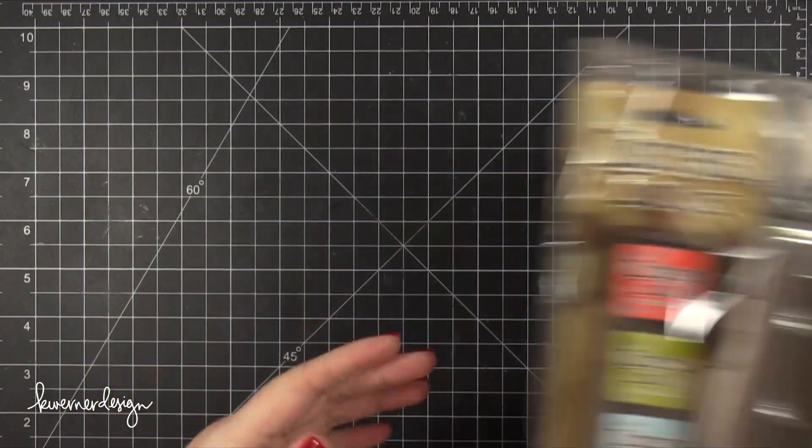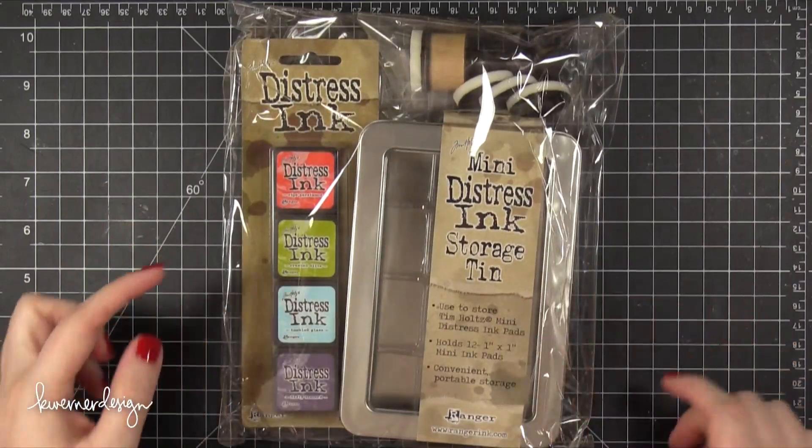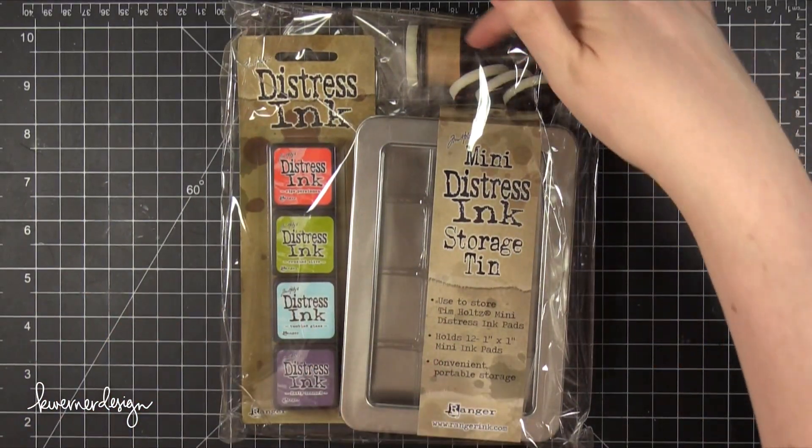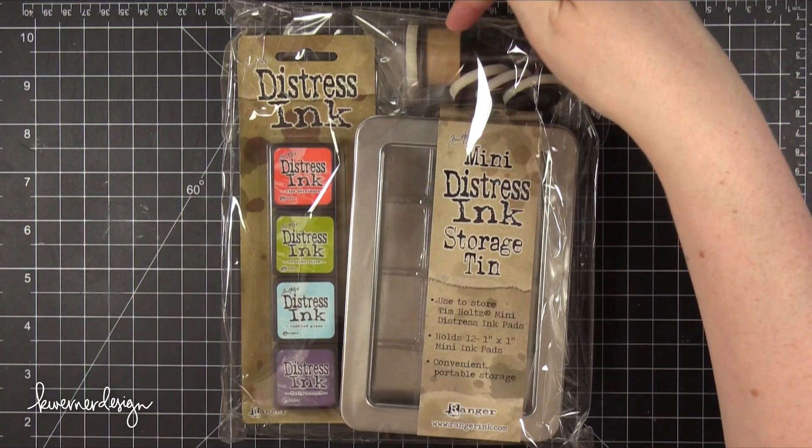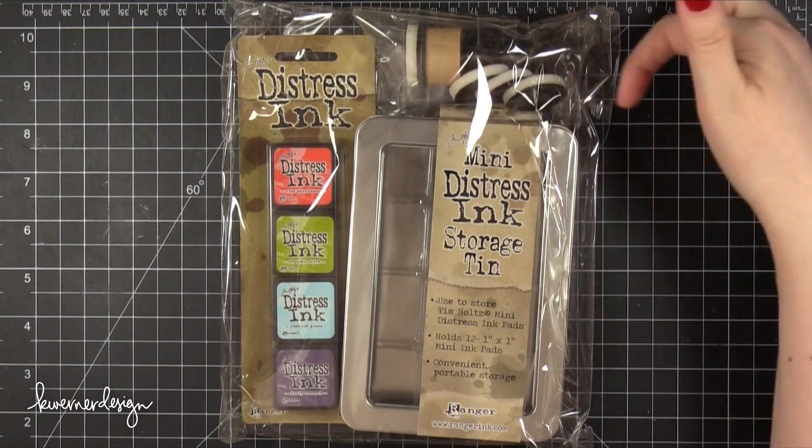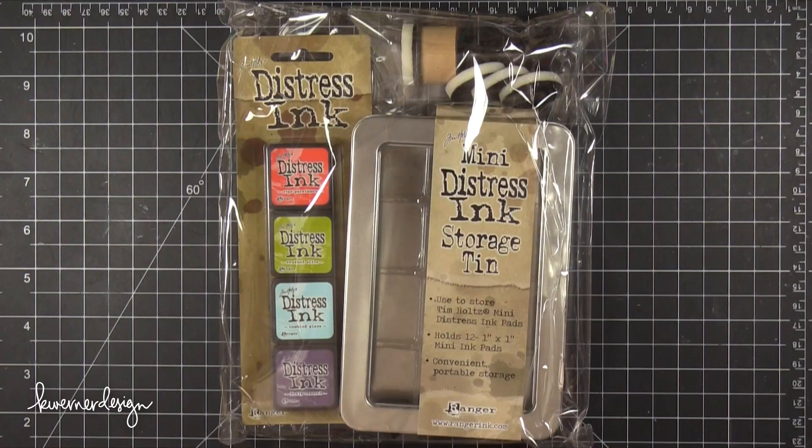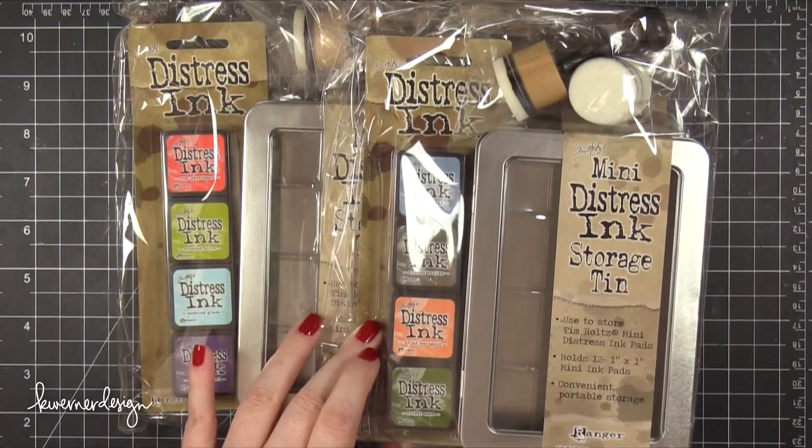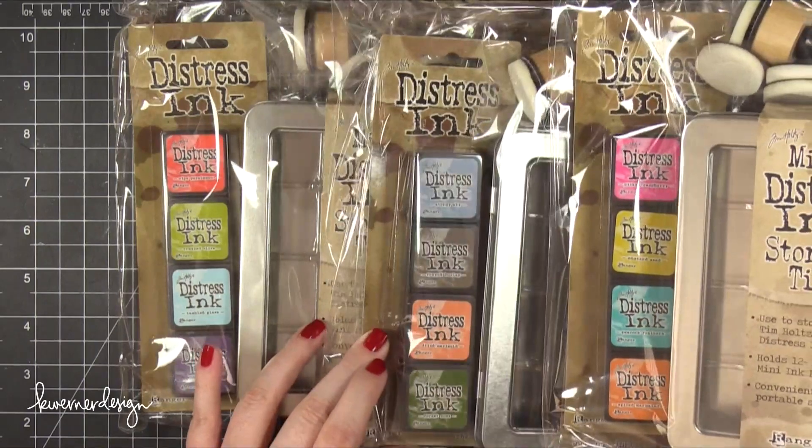The prizes are these fun packs of Mini Distress Inks, a Mini Distress Storage Tin and the Mini Round Blending Tool. You have the Blending Tool and three of the Refill Sponges. So there are three packs. Each of them have a different color combination of ink pads.